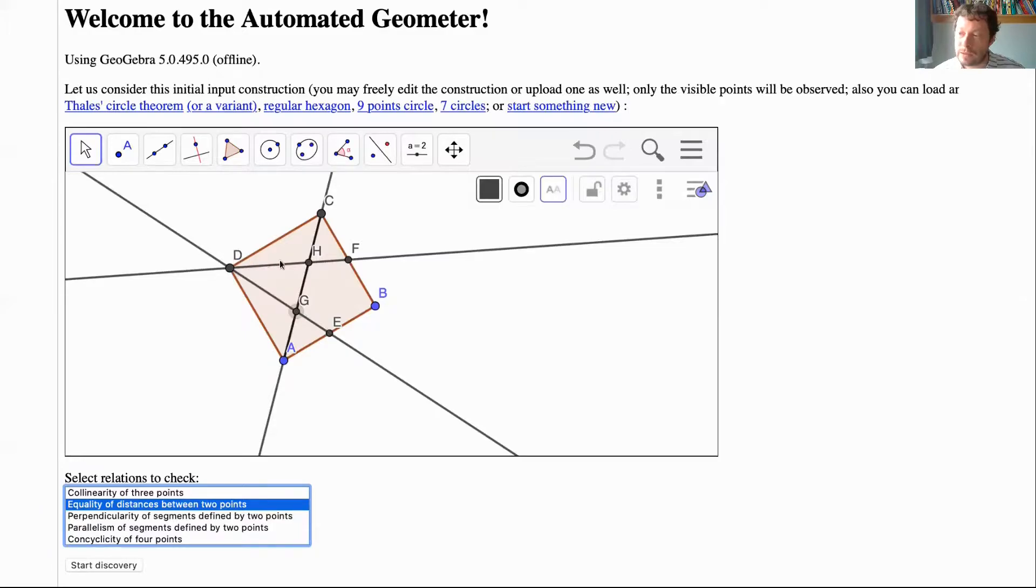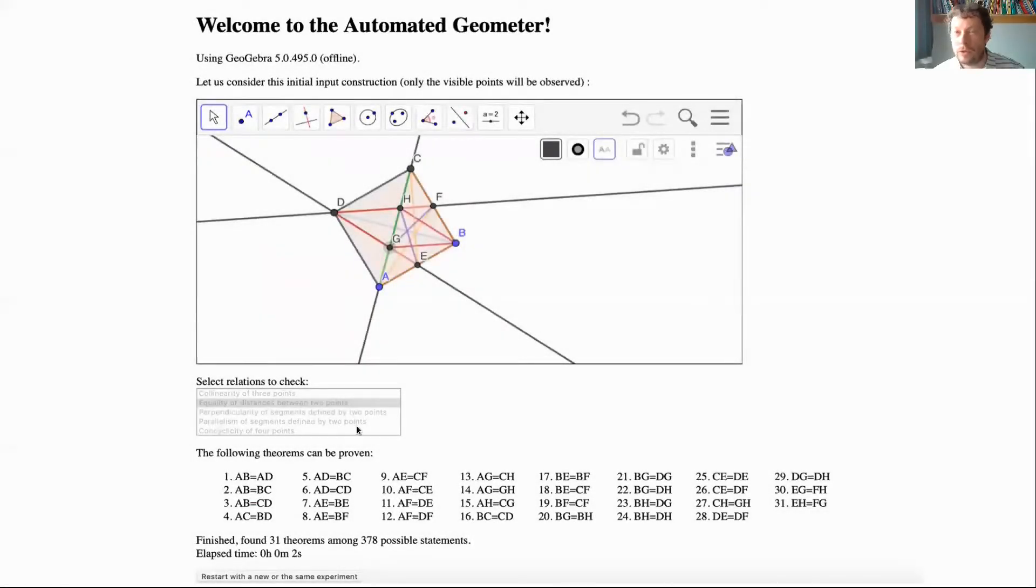After having a square, automated geometry learns about the whole figure. We created two lines through D and the midpoints of opposite sides, created the diagonal AC, and the intersection points. In two seconds on a MacBook 2015, 31 statements were obtained. Some aren't very interesting, but searched equations AG equals CH and AG equals GH are there, obtained automatically.